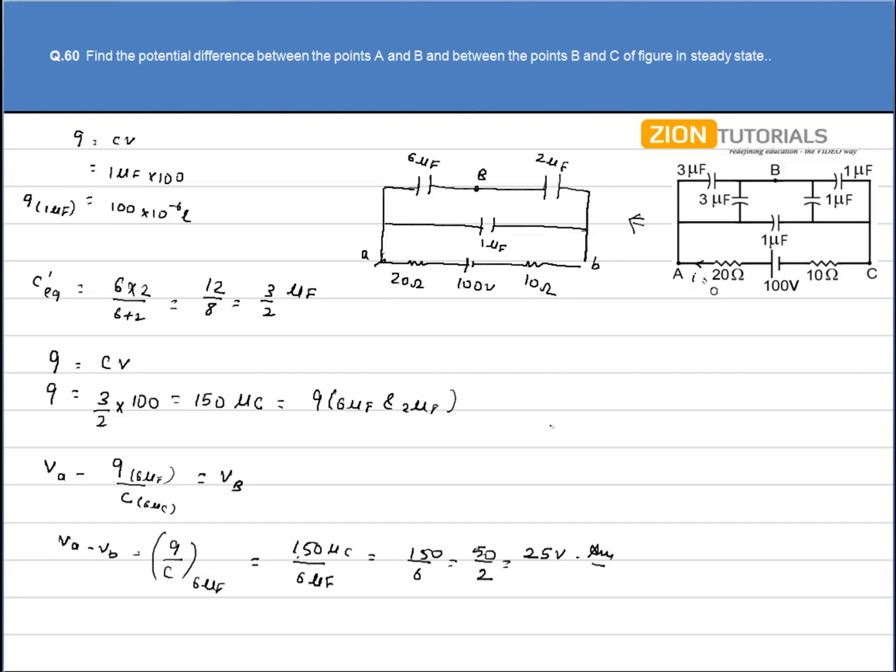That is my answer to the first part. Similarly to calculate the potential difference between point B and point C, I have Kirchhoff law VB minus VC is equal to Q by C. And this time for 2uF capacitor. So charge is again 150uC and capacitance is 2uF. So answer comes out to be 75V. That is the answer.